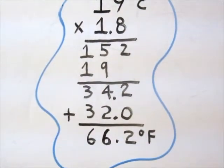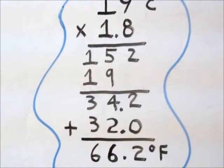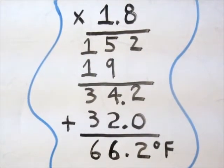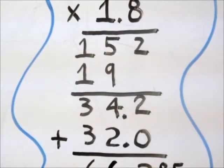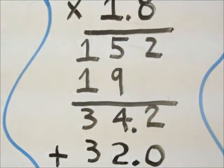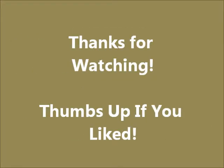Now remember that when you're multiplying, since the decimal has moved one place to the left in 1.8, we have to move the decimal one place to the left in our answer as well. So when you get 342, or whatever answer you get, you must move your decimal one place to the left. It's a very easy formula and one that you'll probably be able to memorize yourself.